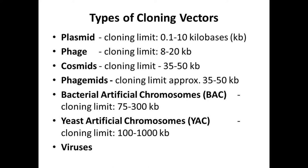We will see which are the types of cloning vectors usually used for genetic engineering experiments. They are the following: plasmids, phages, cosmids, phagemids, bacterial artificial chromosomes or BACs, yeast artificial chromosomes or YACs, and viruses.